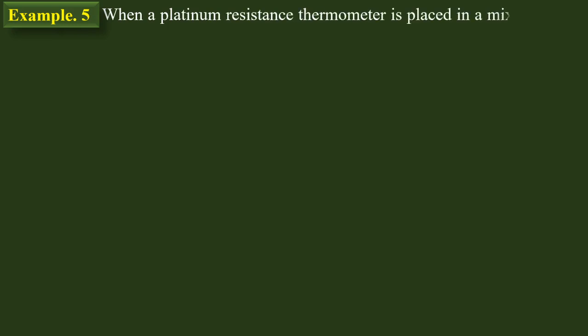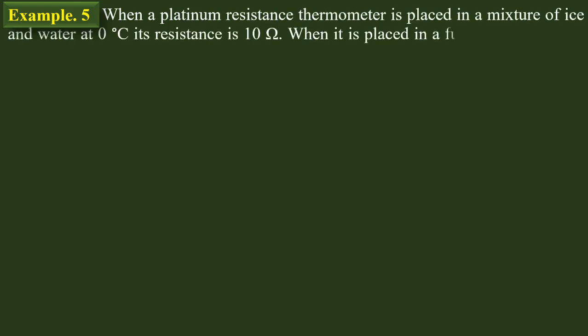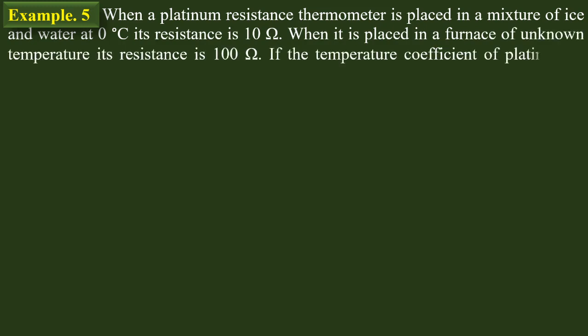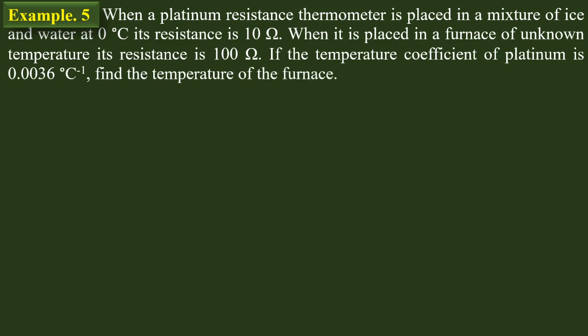Example one: A platinum resistance thermometer is placed in a mixture of ice water at zero degrees Celsius; its resistance is 101 ohms. It is placed in the flame of an oven and its resistance is 100 ohms. The temperature coefficient of platinum is 0.00365 per degree Celsius. Find the temperature of the flame.